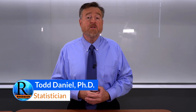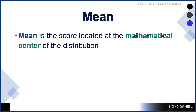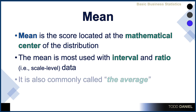There are three measures of central tendency: the mean, the median, and the mode. Now we're going to talk about the mean. The mean is the score located at the mathematical center of a distribution. The mean is the most commonly used measure of central tendency when we have interval or ratio level data — what we have also called scale level data — and the mean is most commonly meant when someone talks about an average.